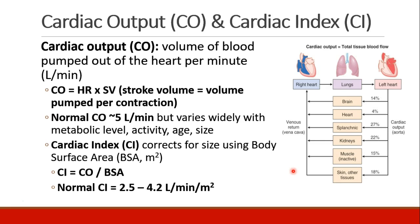We're going to start a discussion of cardiac output. Cardiac output is very simply the volume of blood that the heart pumps out per minute, expressed in liters per minute. We can calculate cardiac output by looking at the number of beats per minute, which is the heart rate, multiplied by the stroke volume, which is the volume of blood pumped per contraction.